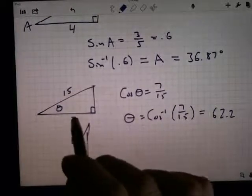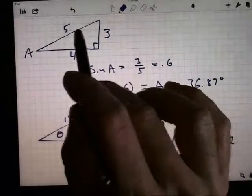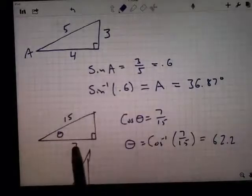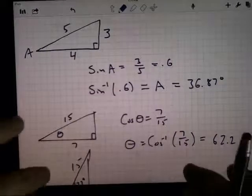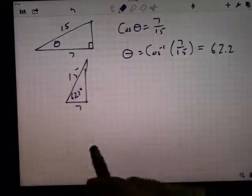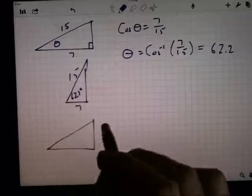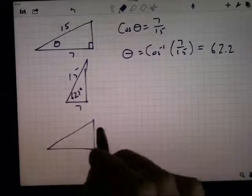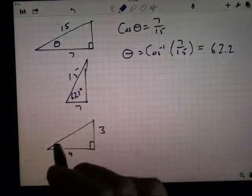So depending on the two sides you have, in the first example I used 3 and 5, those were the sine. In the second example here, I've got 7 and 15, that's the cosine. And likewise, if you had something using, let's take one more example and throw in here. Suppose the side length here is 3 and the side length there is 4. What's this angle?